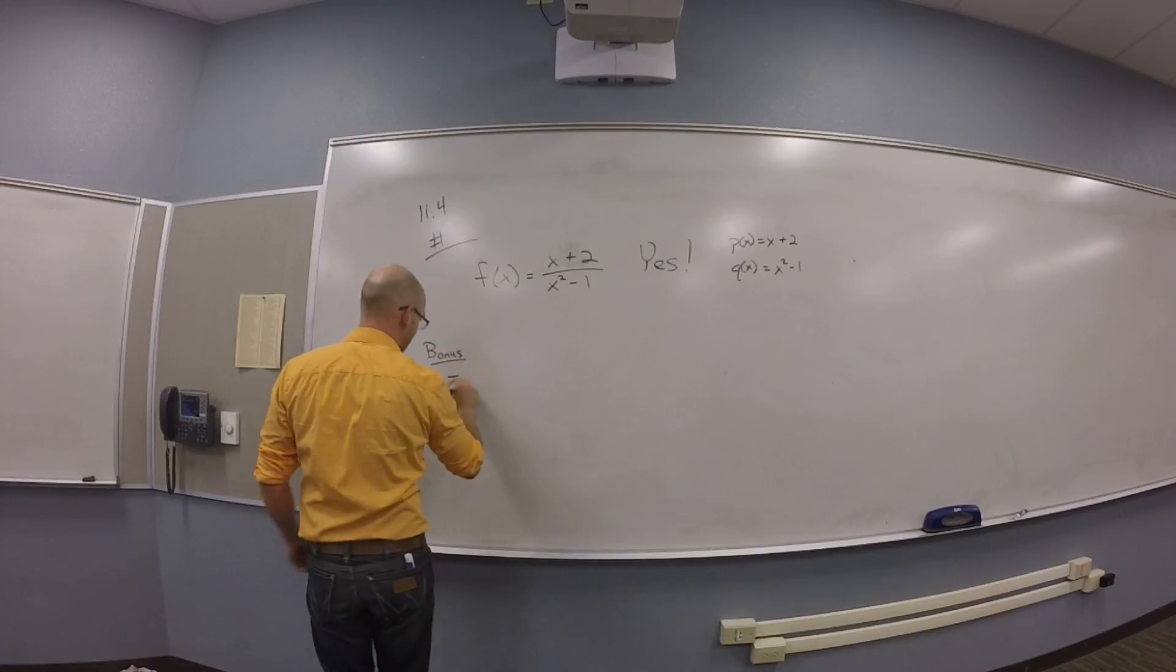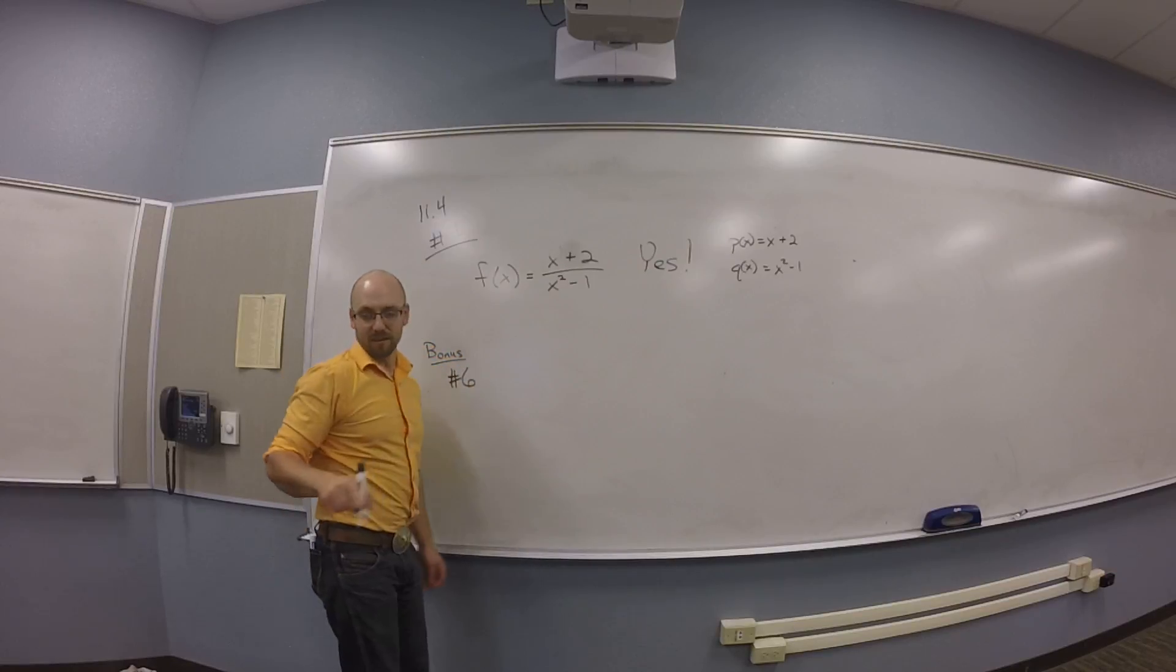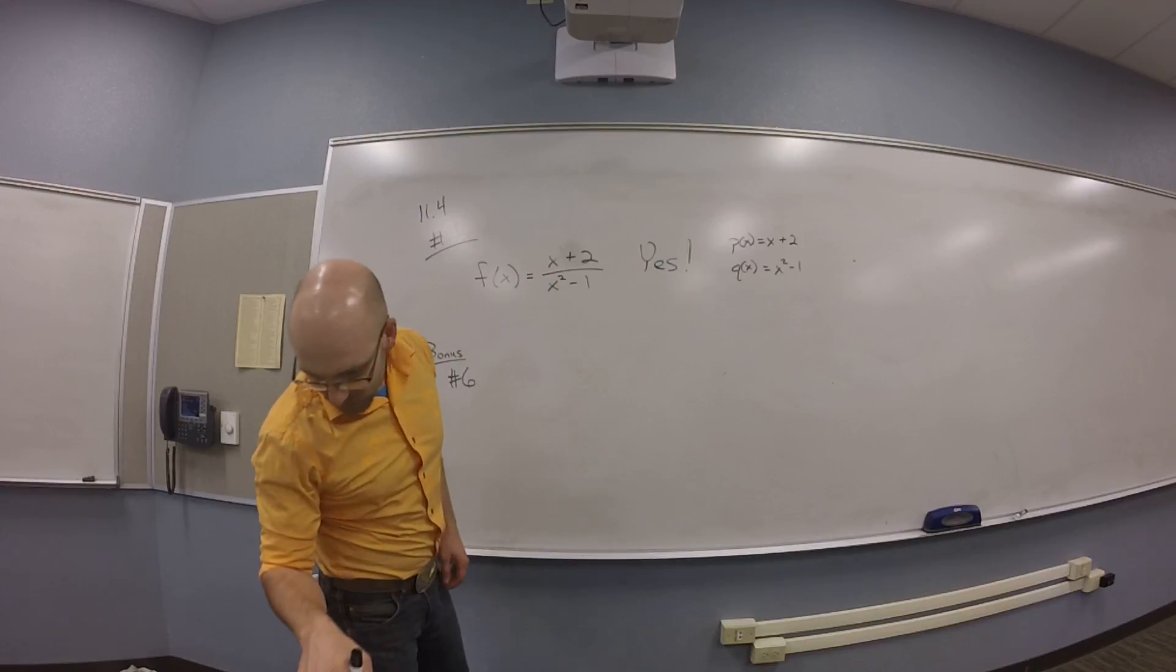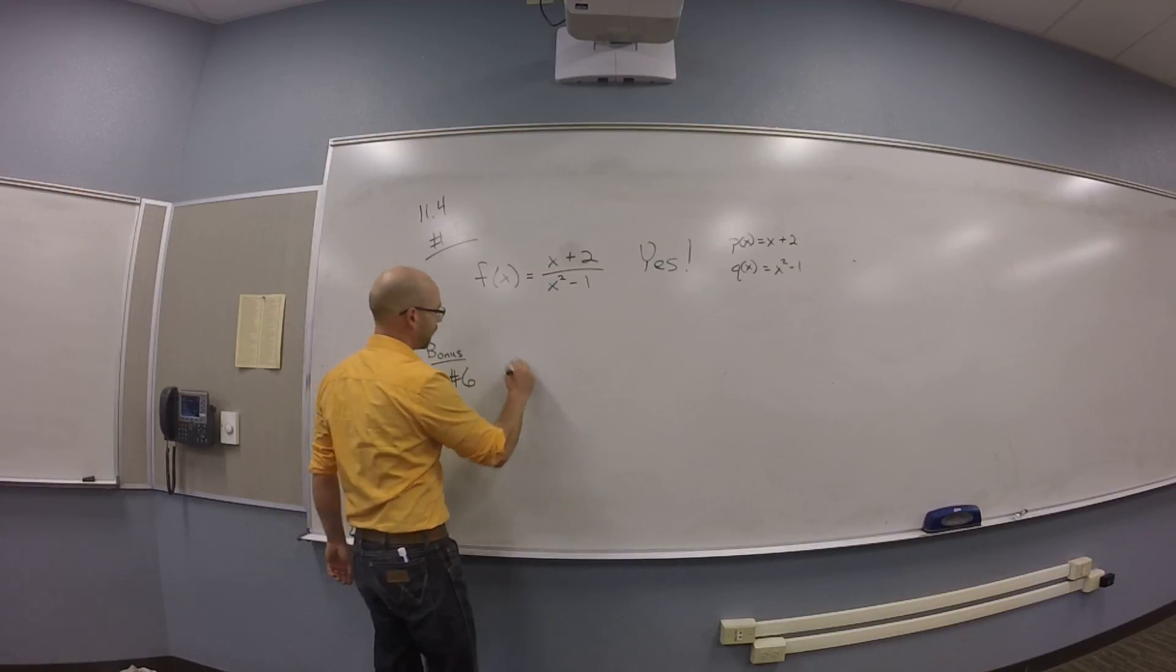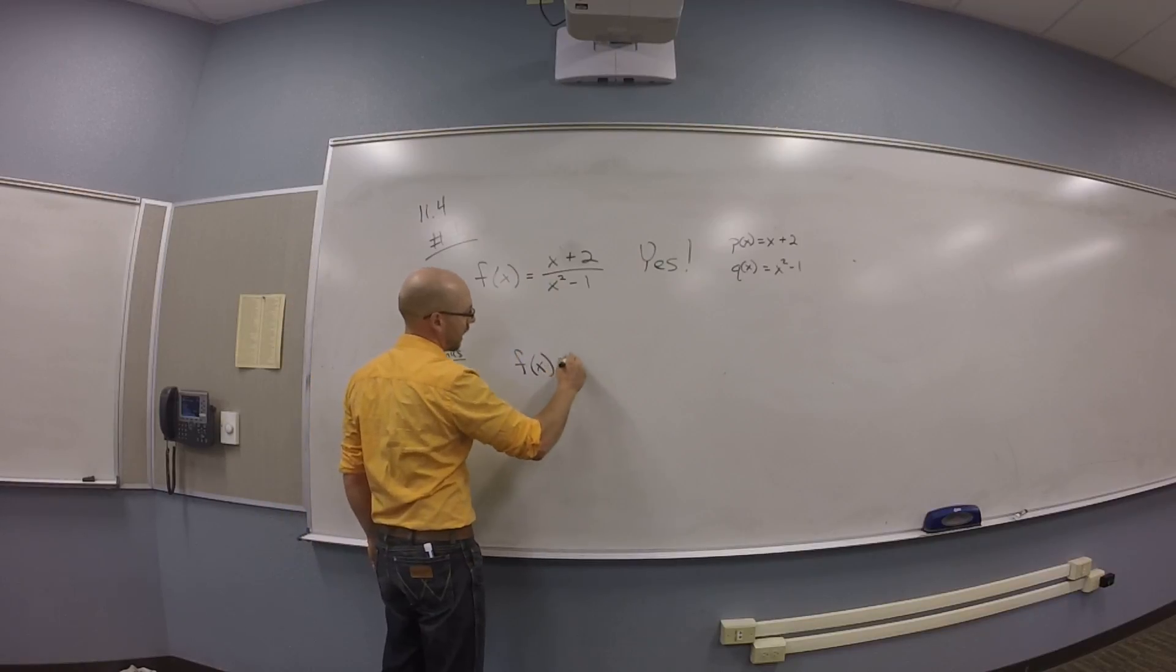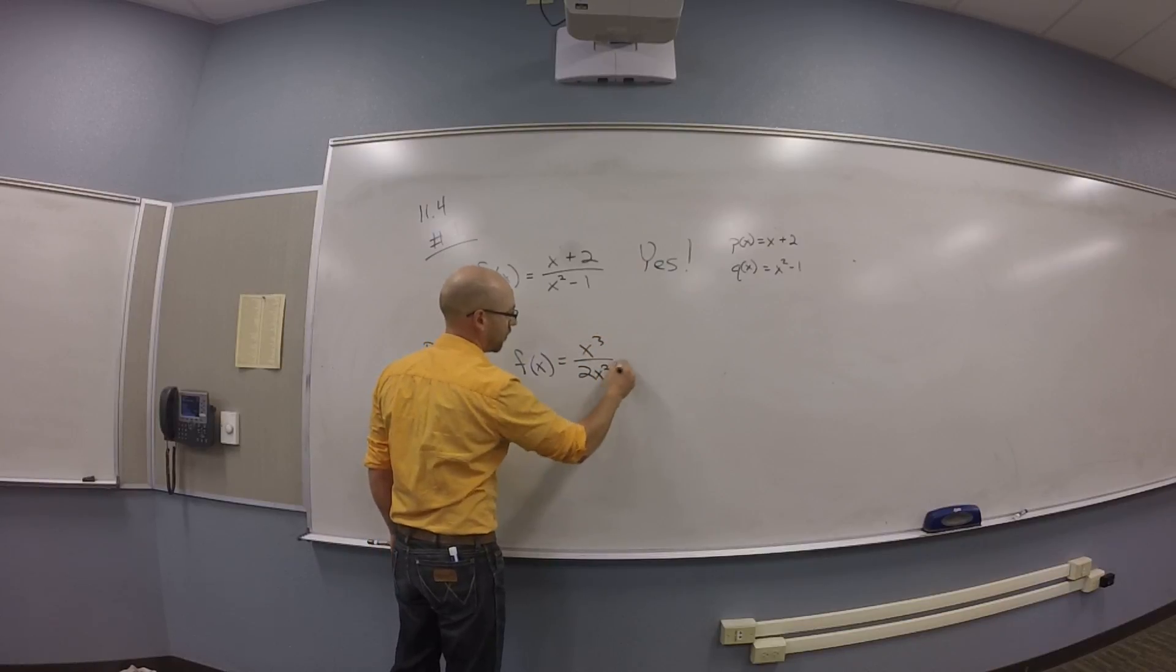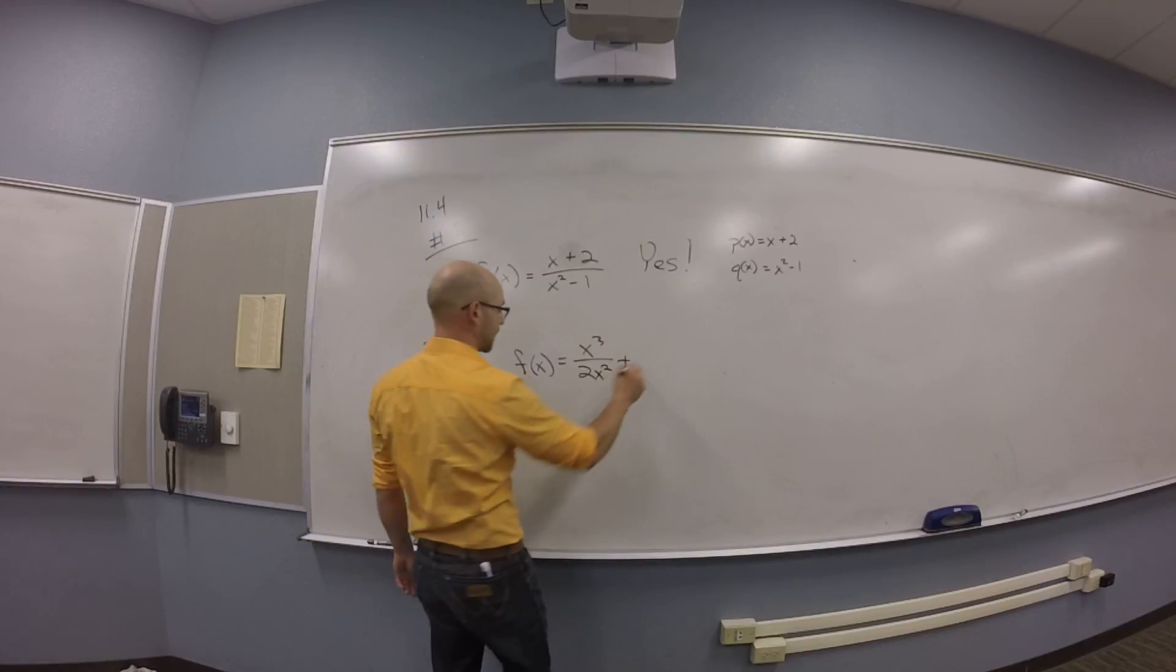So bonus, number 6. Number 6 has, missed this thing? F of X is X cubed over 2X squared plus 1 over 6.